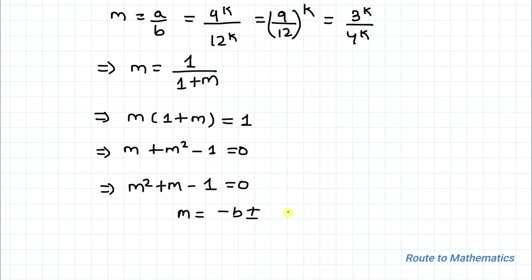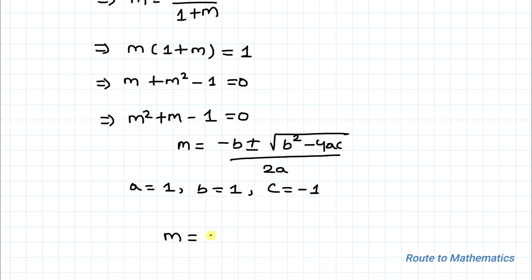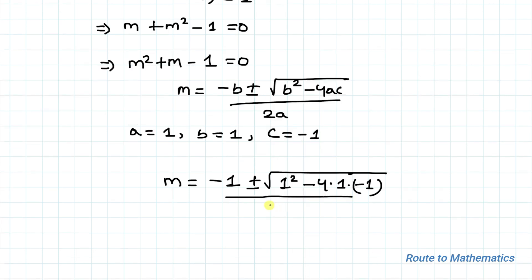Here the coefficients are a = 1, b = 1, and c = −1. So we get m equals (−1 ± √(1² − 4·1·(−1))) / (2·1), which gives m equals (−1 ± √5) / 2.